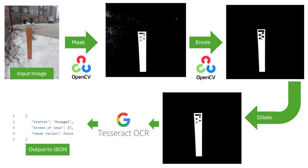This masked image is then eroded, which takes the orange pixels detected and shrinks the areas, making the noise disappear entirely, as shown in the third image. This also shrinks the stake, so the image must be dilated — taking any pixels and enlarging them to restore the size of the stake. We then detect the straight lines left behind and crop the image to those dimensions.